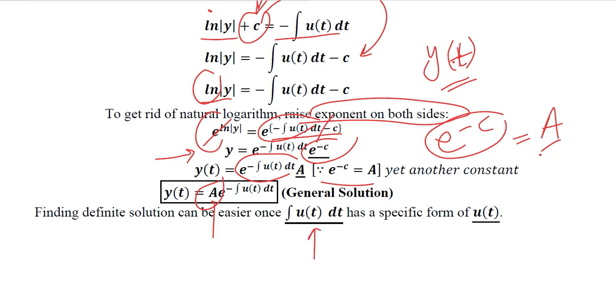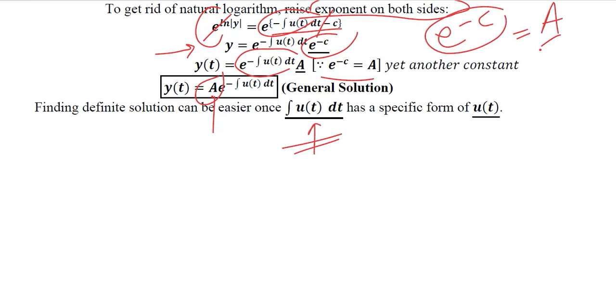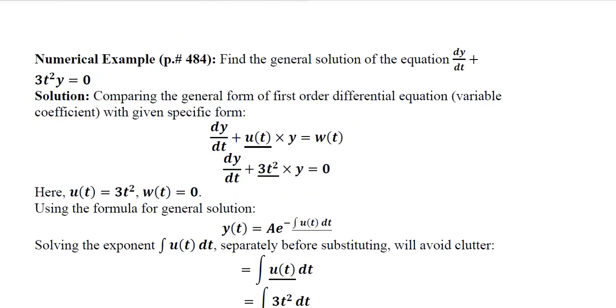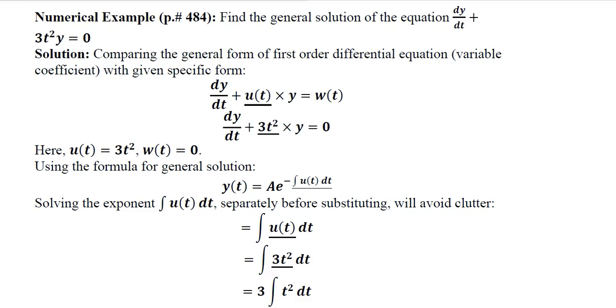So the only thing that we need to know in order to solve this homogeneous case is the value of u(t) and then its integral, which is easily calculatable. So after developing this formula, we should do some numerical. From the book of Alpha C. Chiang, page number 484, we will get this numerical example. And we can extract the values by comparing it with the standard form in which u(t) is here and w(t) is here. The value of w(t) is 0 as it is a homogeneous case, and the value of u(t) will be equal to 3t². So the value of u(t) is written and the value of w(t) is written, which we can put into the formula.